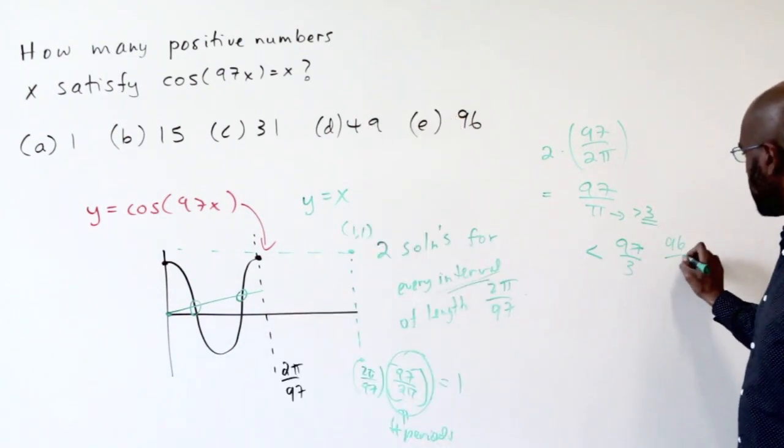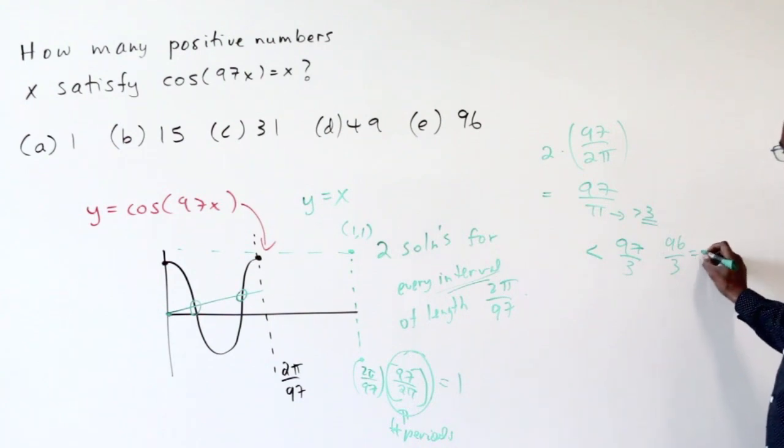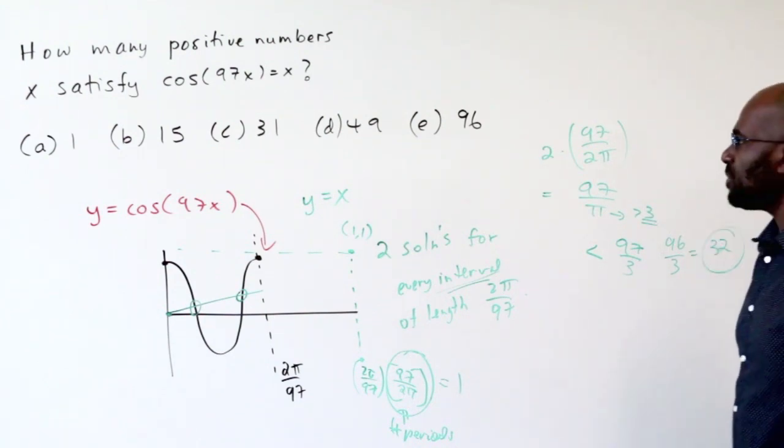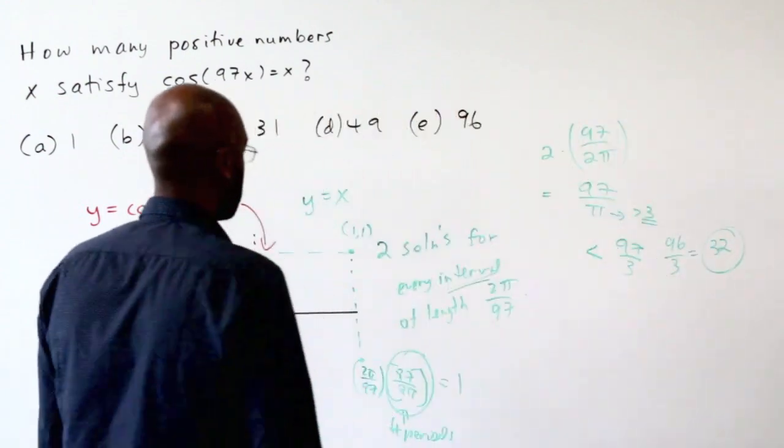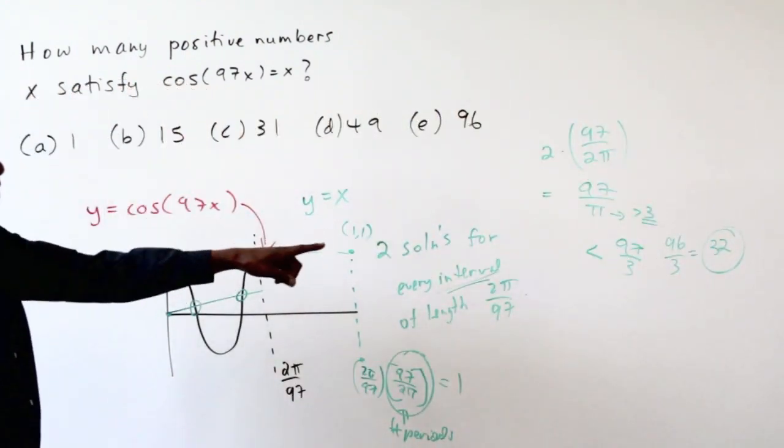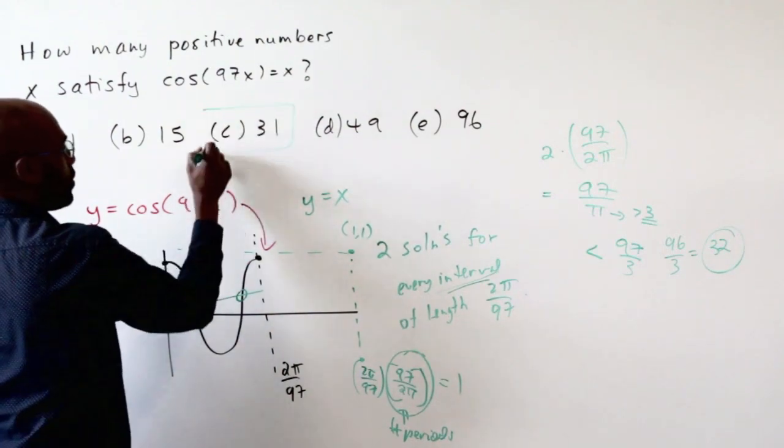That's, let's see, so this is close to 96 over 3, and 96 over 3 is roughly 32. So it should be something on the order of 32, something slightly less than it. And the only thing that comes close to that here is answer choice C.